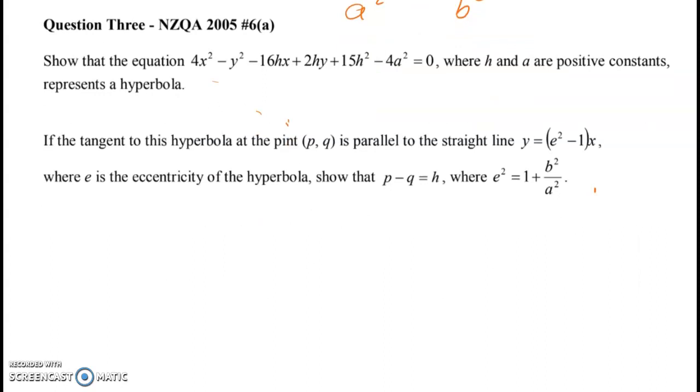Pause the video at this point and now that you've got those hints about completing the square give the first part a go. I'm going to go through it fairly slowly so I'm not going to miss many lines of working. So we'll just start out by writing out what we've got: 4x squared minus y squared minus 16hx plus 2hy plus 15h squared minus 4a squared equals zero, and h and a are both positive constants.